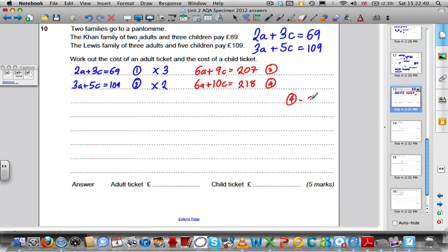I'm doing that because I want to eliminate the a's. The a's are the same. I want to eliminate them. 6a take away 6a is nothing. They're gone as required. 10c take away 9c is 1c. And 218 take away 207 is simply 9. I've already found the cost of a child ticket is 9 pounds.